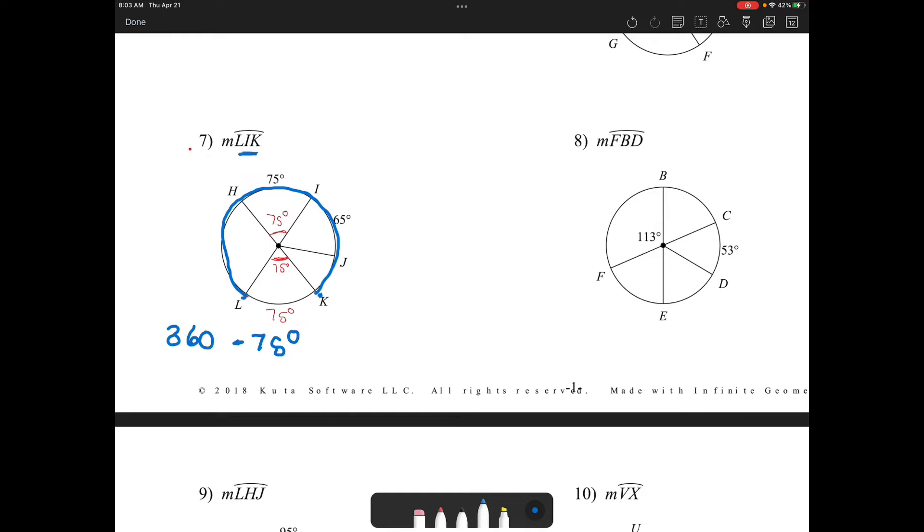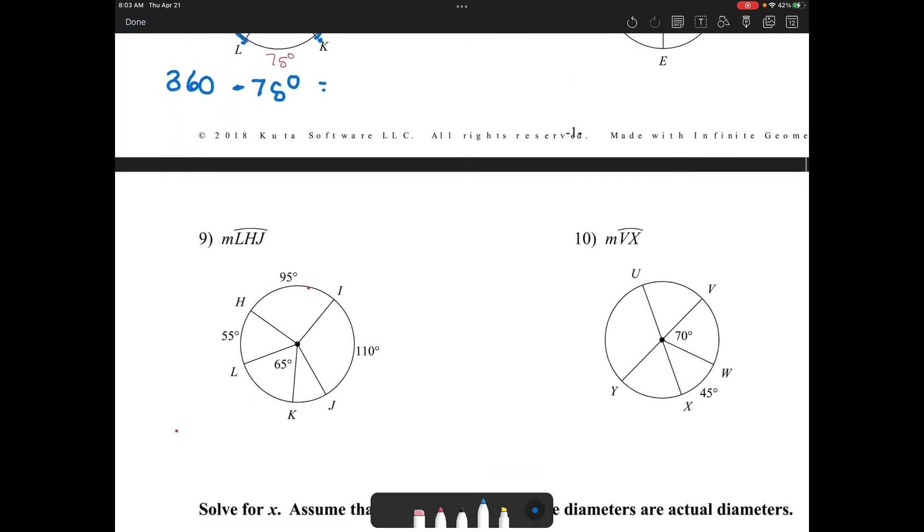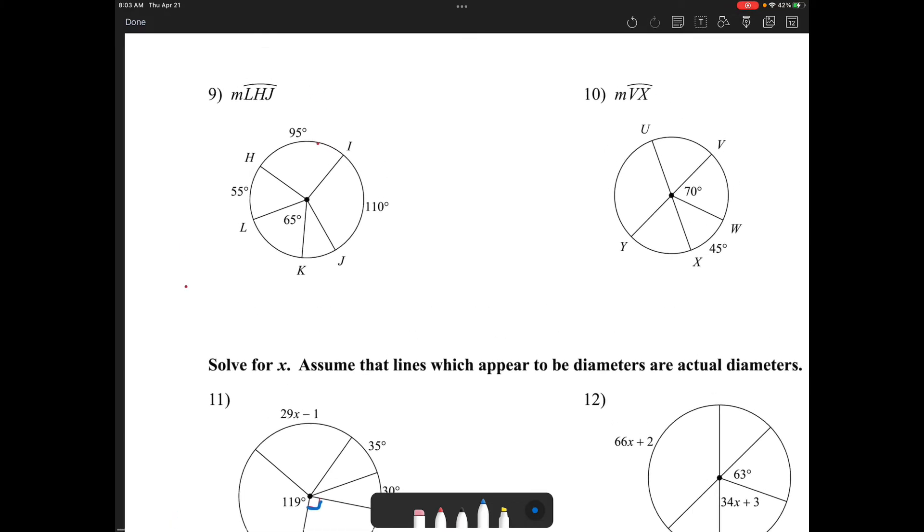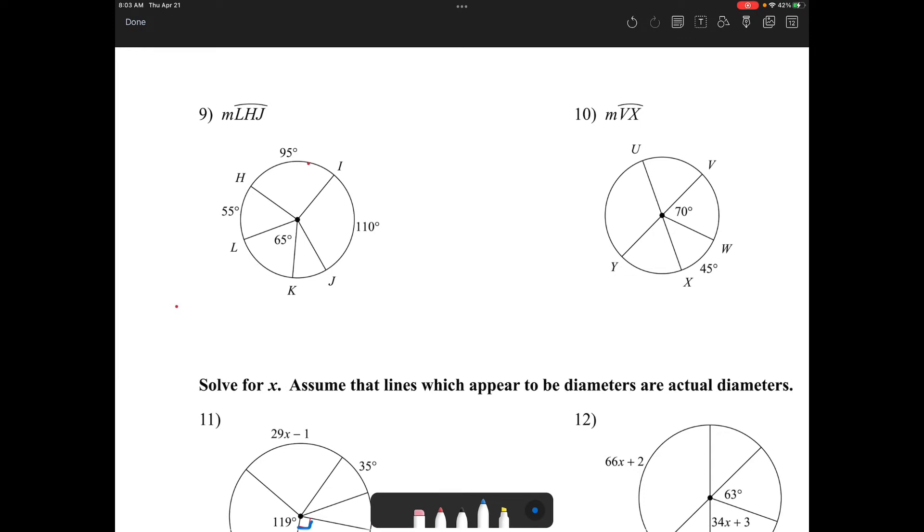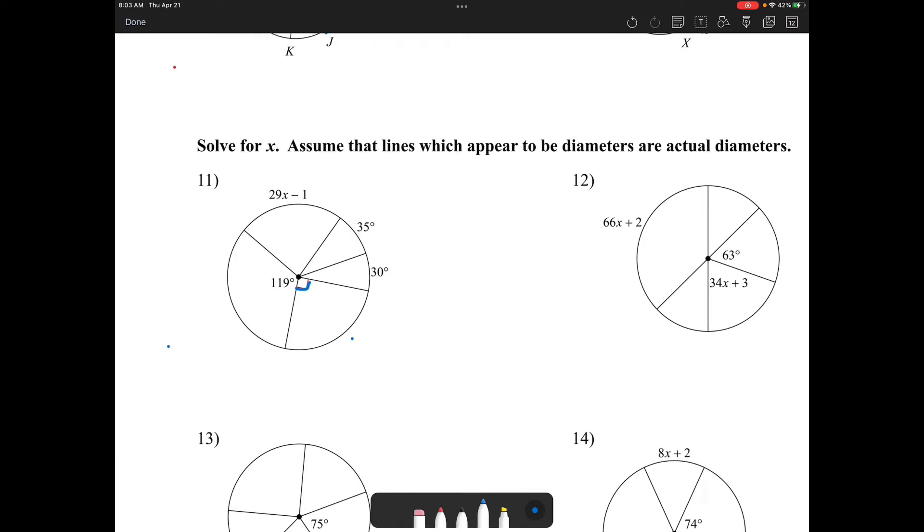So that would be, if I can do that on my calculator right quick, 360 minus 75, that would make LIK equal to 285. Now you have an answer bank, so I would suggest that you use your answer bank to check your answers. Here we're looking for LHJ, so LHJ would be this measure. I'm going to let you figure that one out.